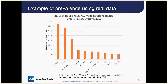In this case, we're looking at 10-year prevalence, and we're seeing the total number of people living with cancer in Ontario who were diagnosed in the last 10 years. This graph shows that the cancer types with the highest prevalence are cancers that are very common — in other words, they have high incidence rates — and tend to be the ones that have good survival, such as prostate and breast cancer.